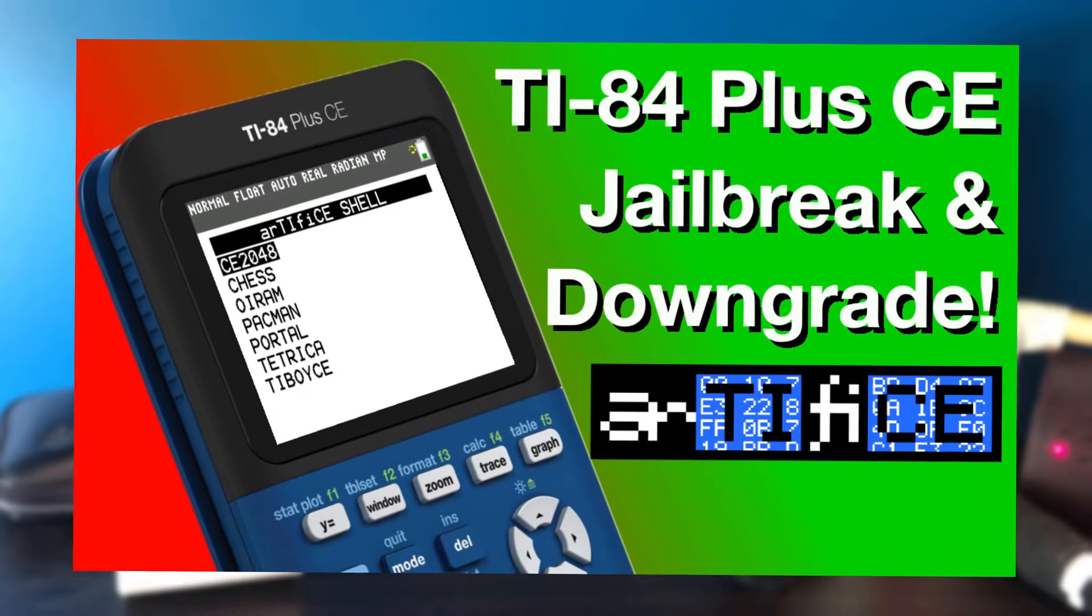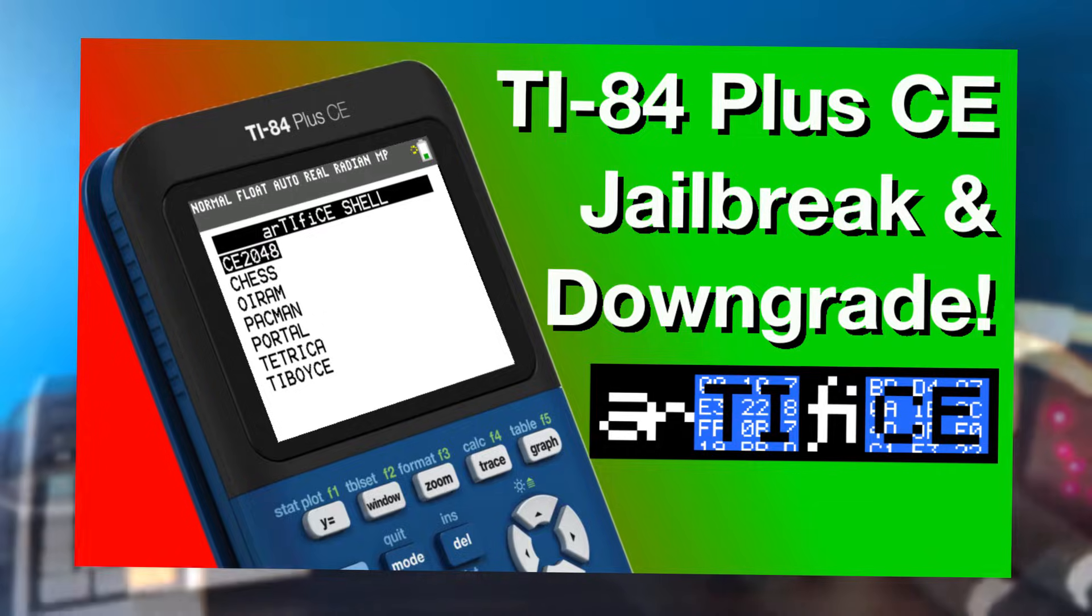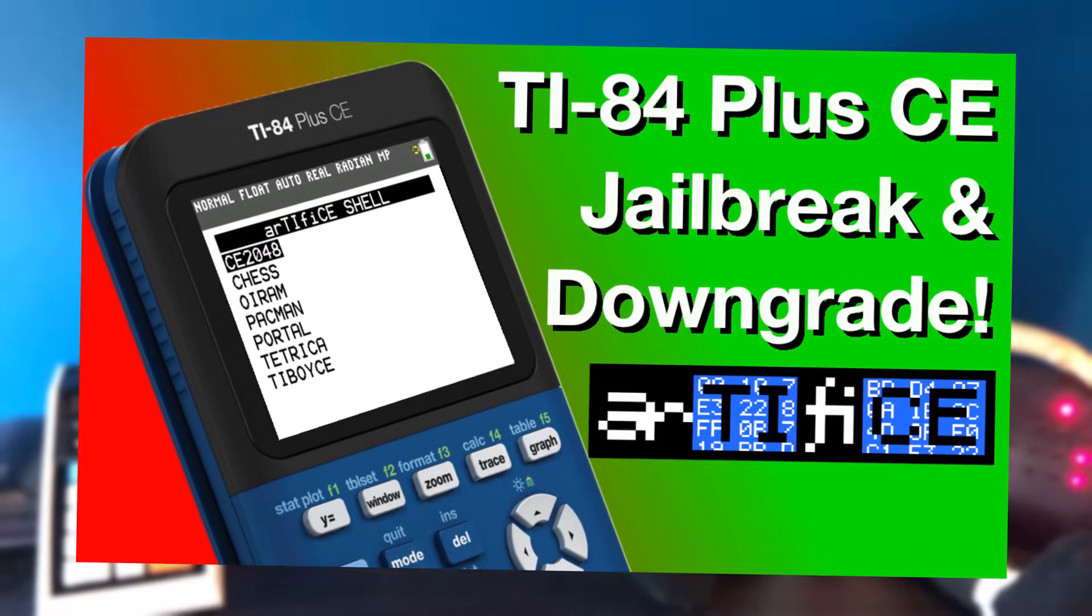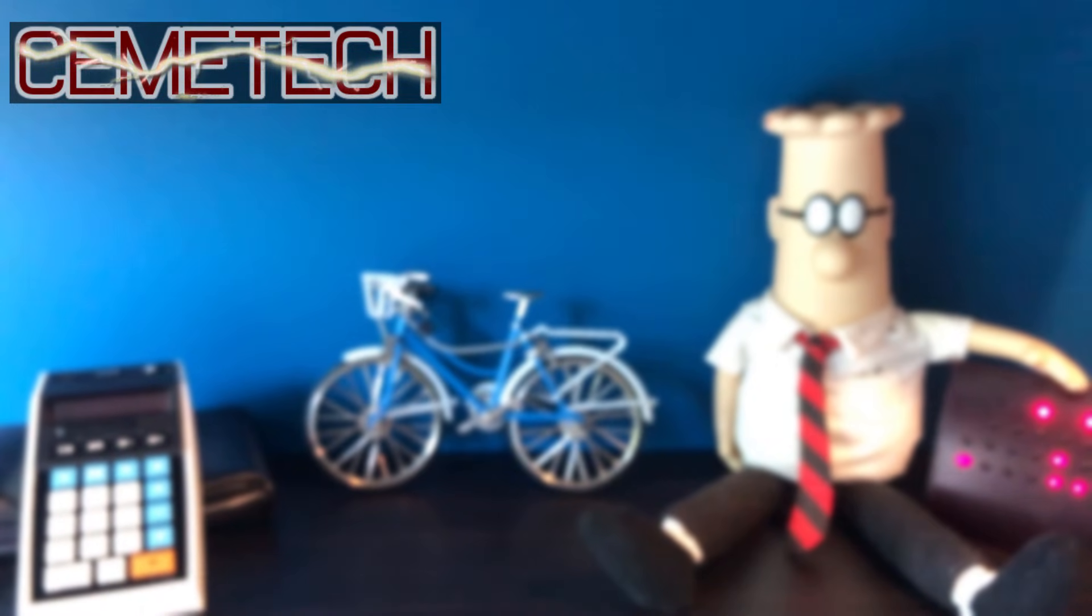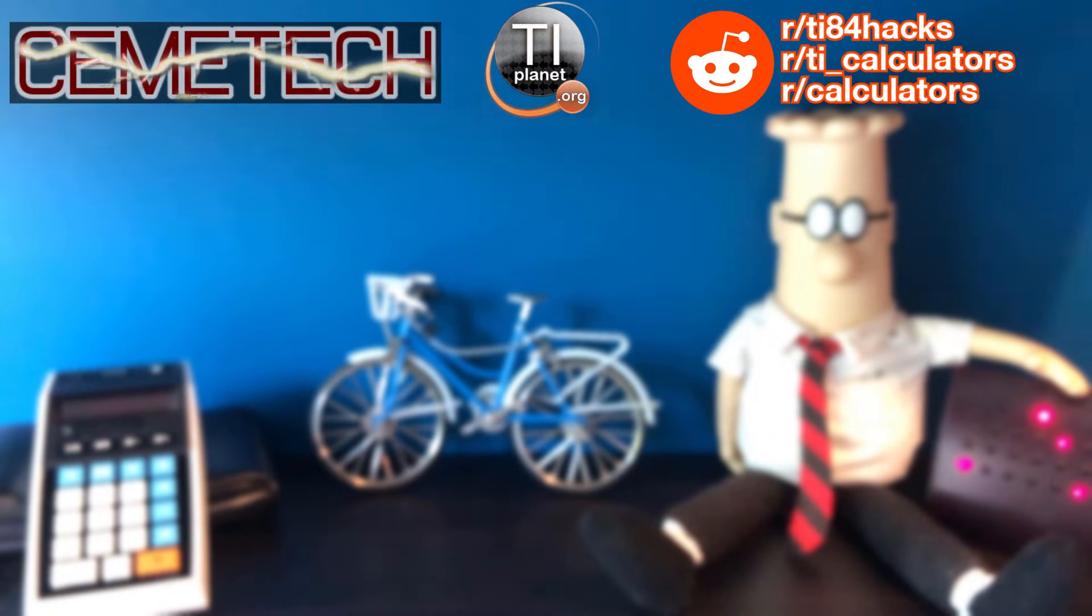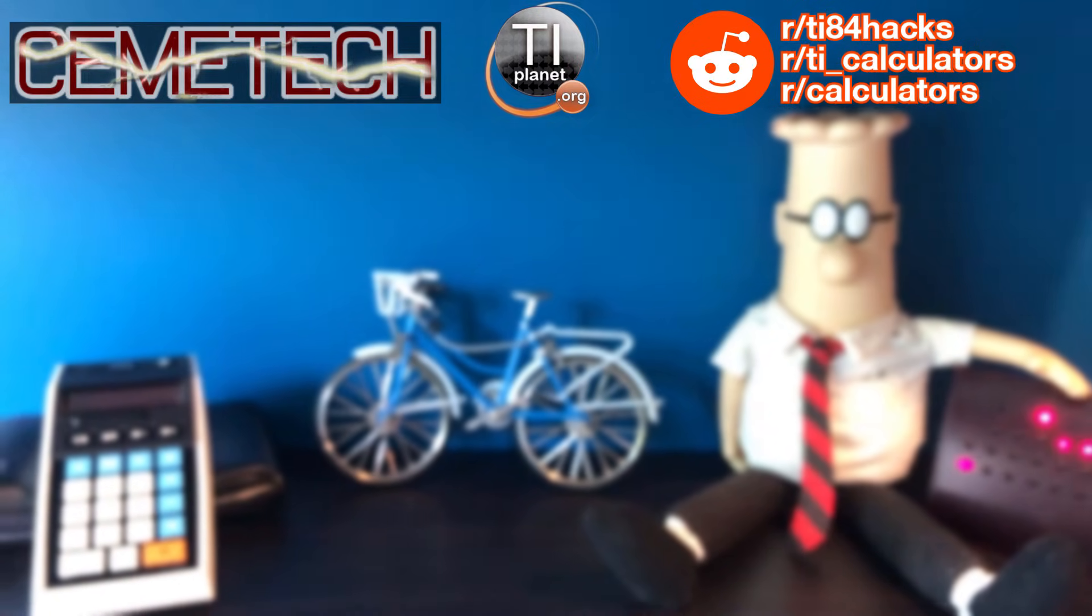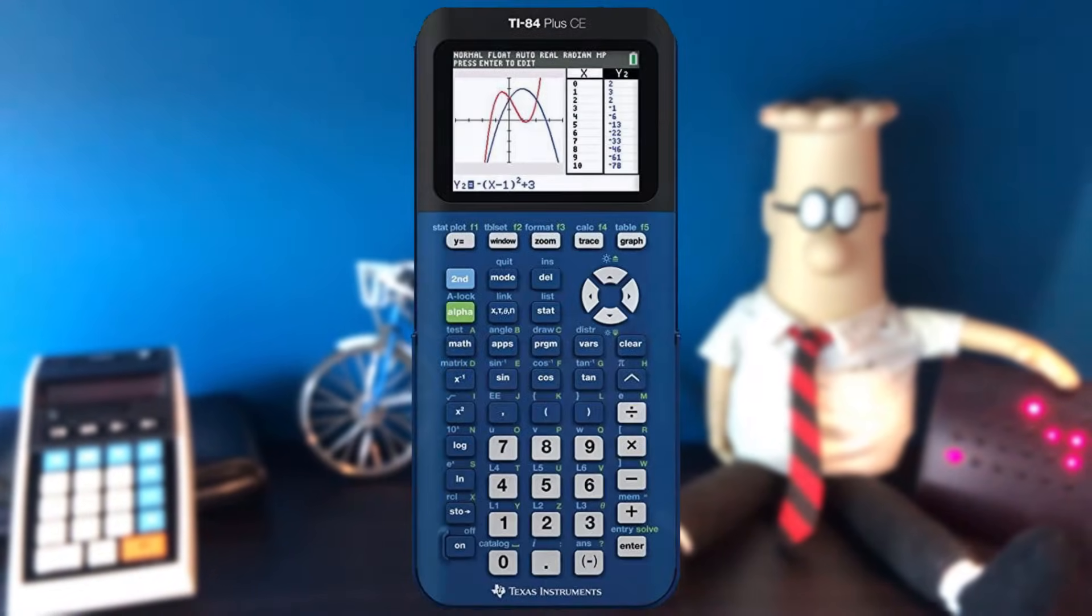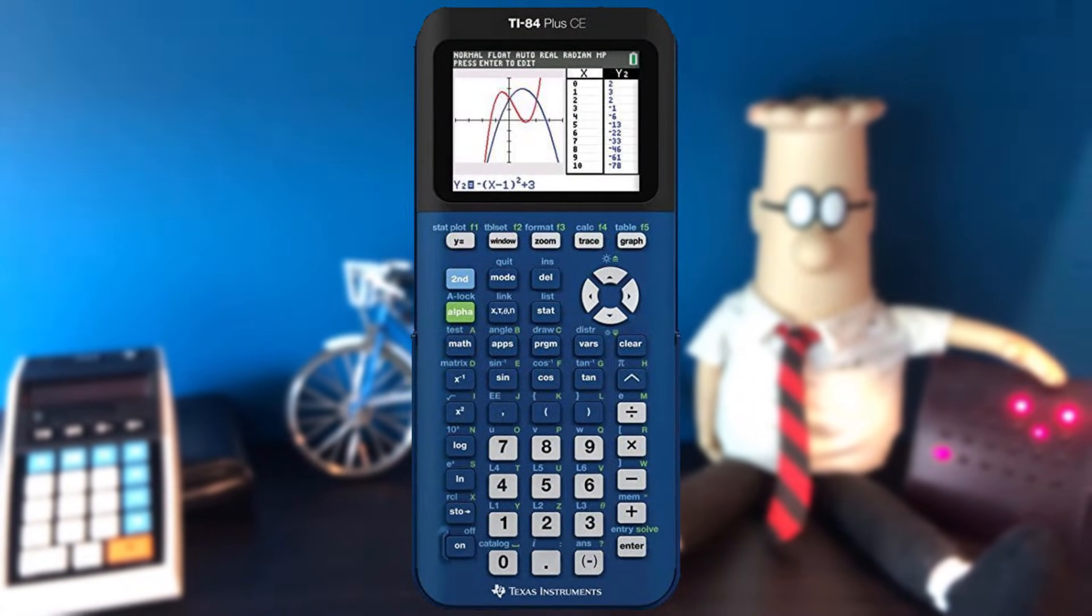A jailbreak has been available for a year now, so programs can still be run, and there's big active communities on sites like Chemitech, TI Planet, and Reddit able to assist with any issues you could encounter. You can buy the TI-84 Plus CE used, and it will still be faster than any of its predecessors. However,